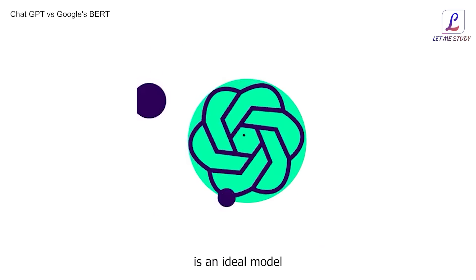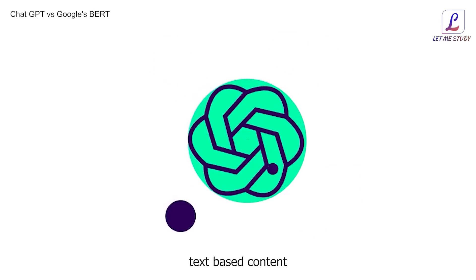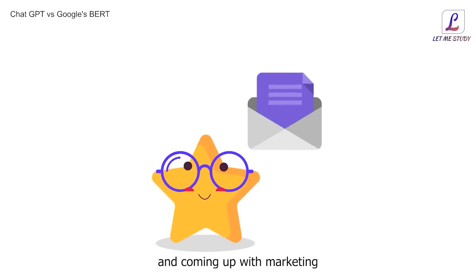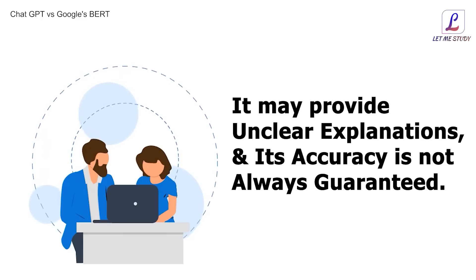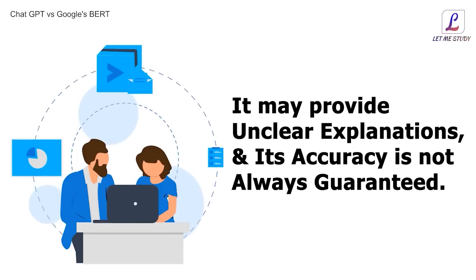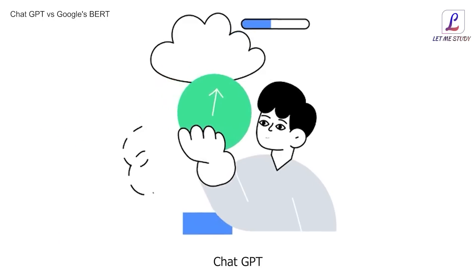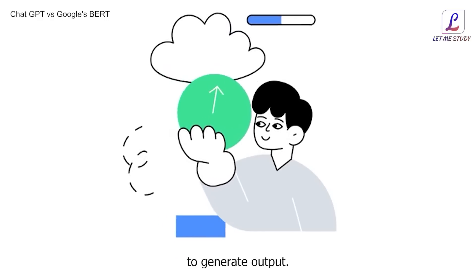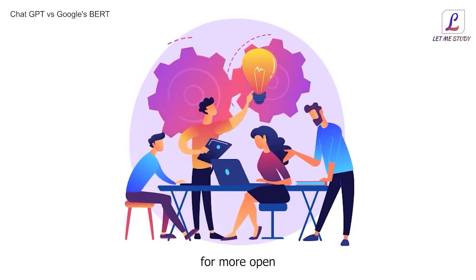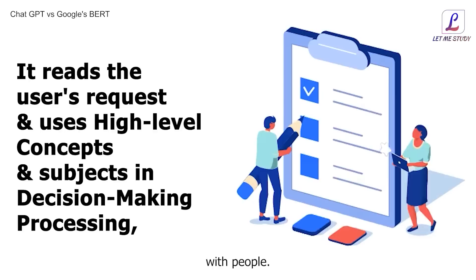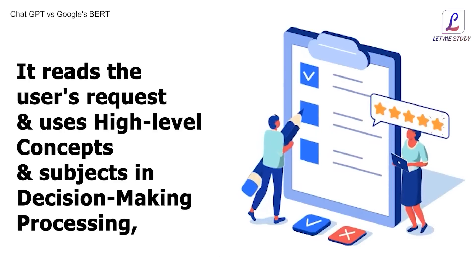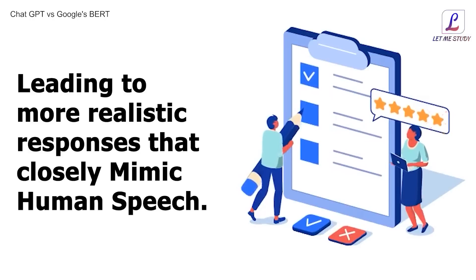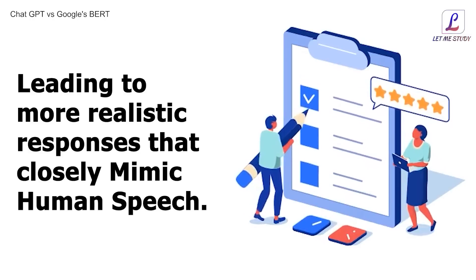In terms of applications, ChatGPT is an ideal model for creating text-based content such as articles, emails, and marketing content ideas. However, it may provide unclear explanations and its accuracy is not always guaranteed. ChatGPT can malfunction and users need to be patient as it can take a while to generate output. Google's BERT is designed for more open-ended and genuine conversations with people. It reads the user's request and uses high-level concepts and subjects in decision-making processing, leading to more realistic responses that closely mimic human speech.